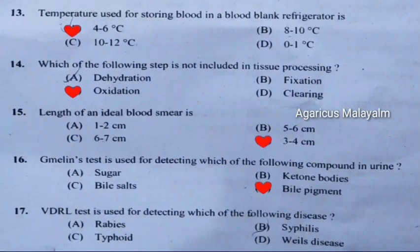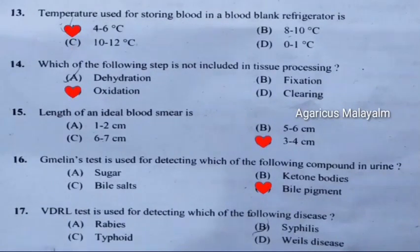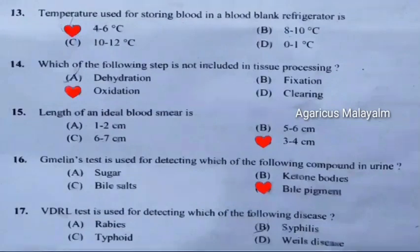Seventeenth question: VDRL test is used for detecting which of the following diseases. Correct answer is Option B: Syphilis.